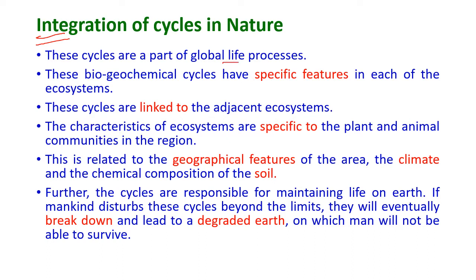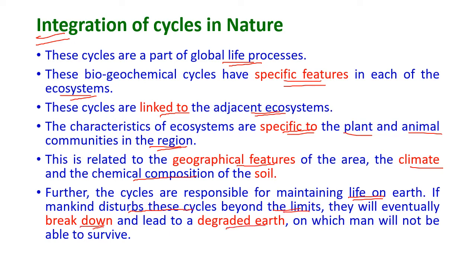The above cycles are part of the global life processes. These biogeochemical cycles have specific features in each ecosystem and are also linked to adjacent ecosystems. The characteristics of ecosystems are specific to the plant and animal communities in the region, related to its geographical features, climate, and the chemical composition of the soil. These cycles are responsible for maintaining life on earth. If mankind disturbs these cycles beyond certain limits, they will eventually break down and lead to a degraded earth on which humans will not be able to survive.